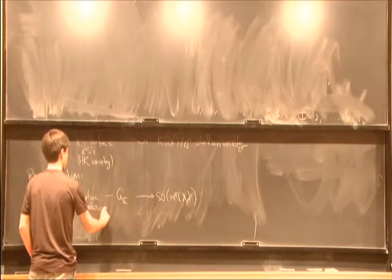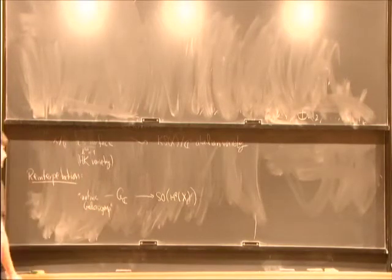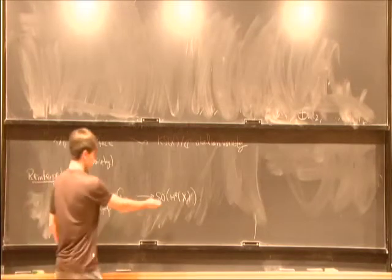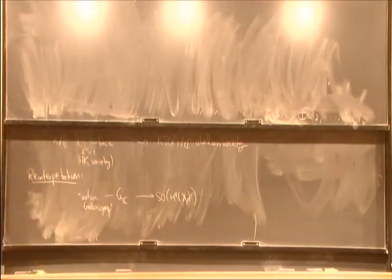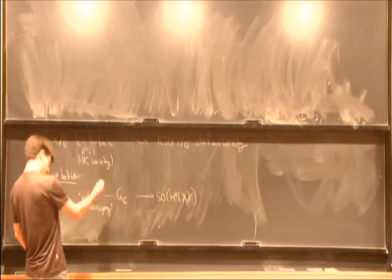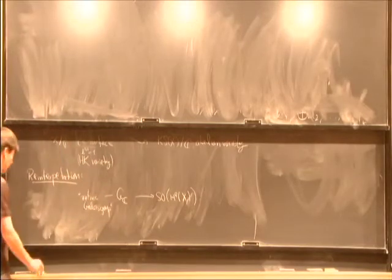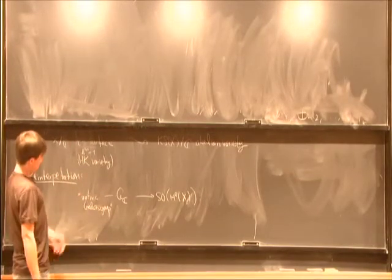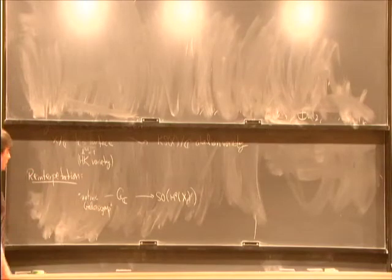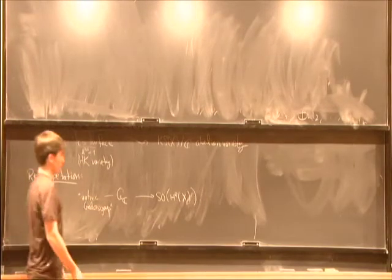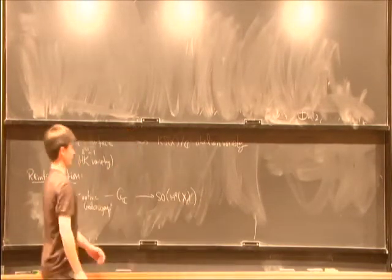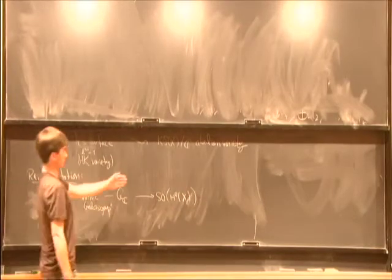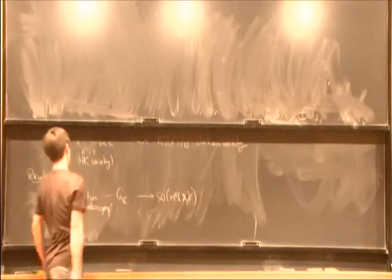If you take the category of pure motives over C for homological equivalence, conjecturally this should be a Tannakian category, which just means that there is a pro-algebraic group whose representations correspond to objects of the category. In particular, here's an object, so we get a representation.